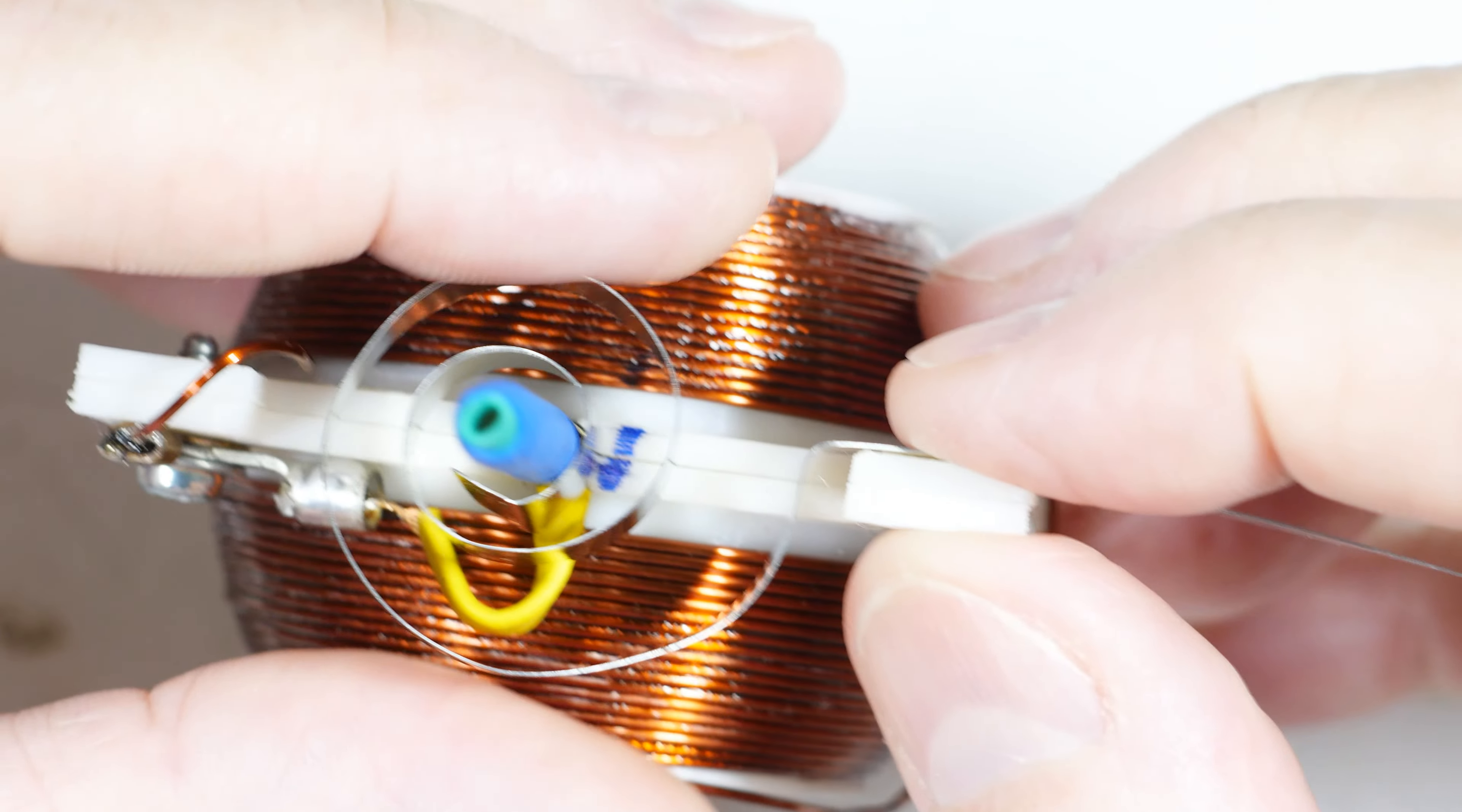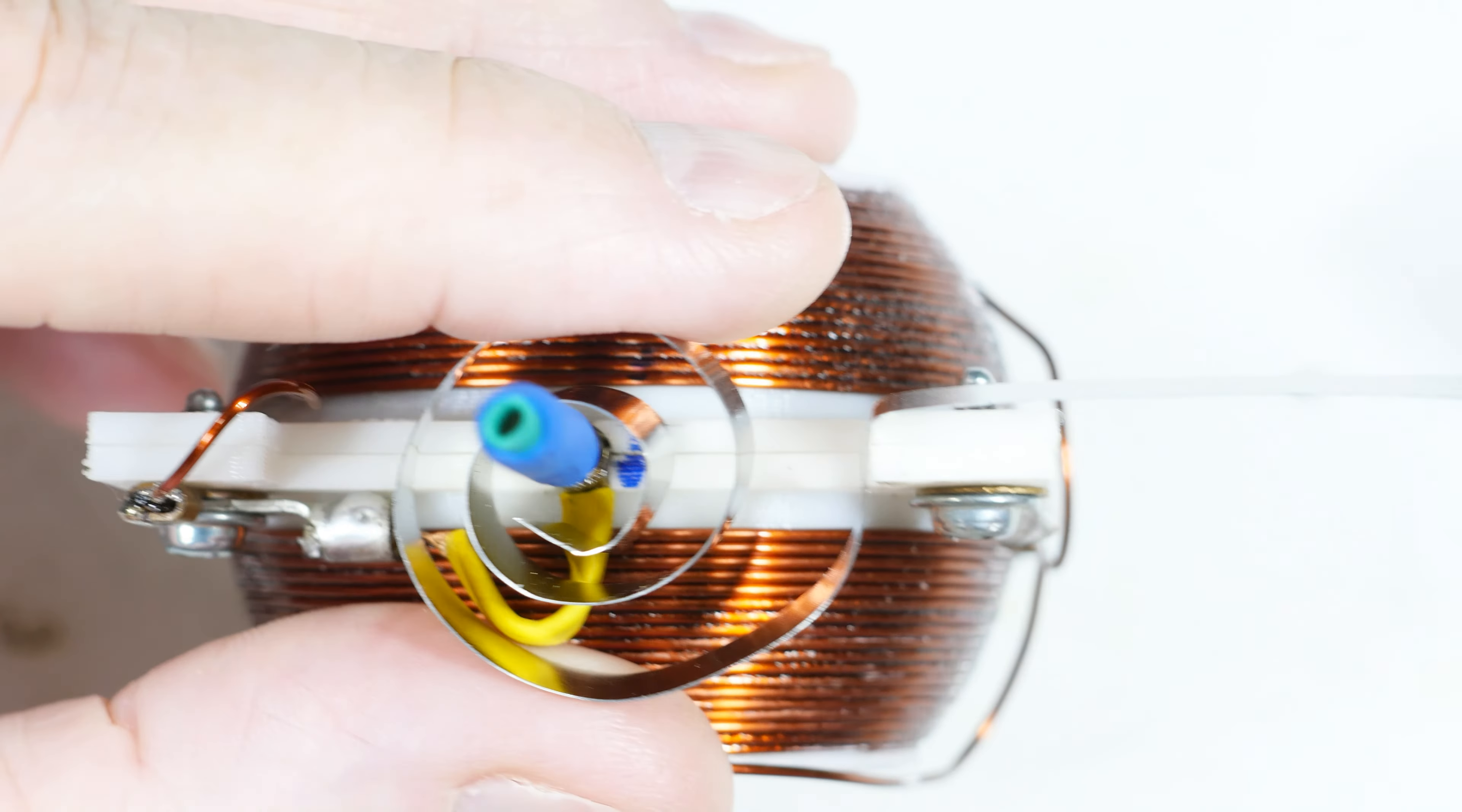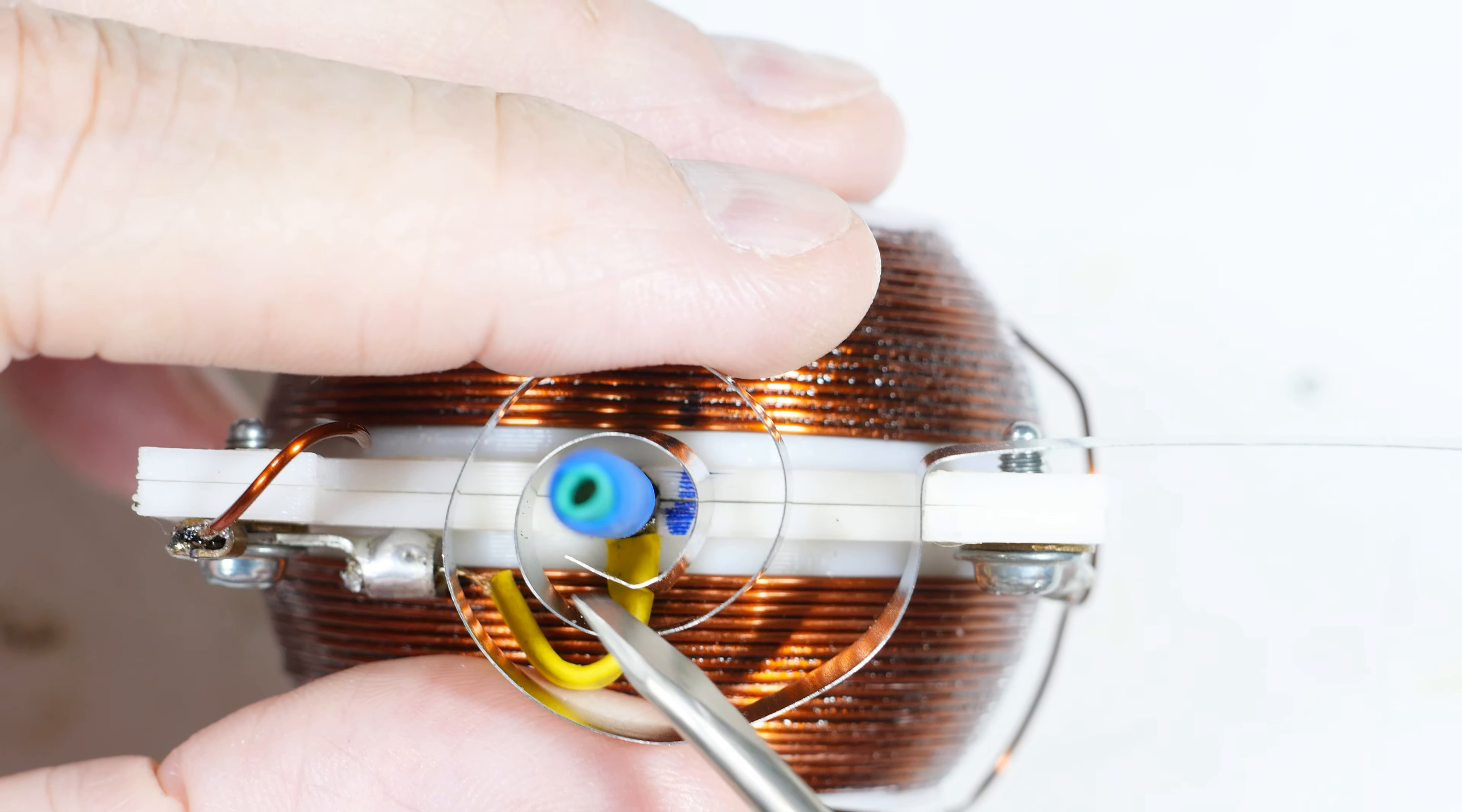And then the center part, you would—I'll get my finger out of the way—you can curl this around the shaft, solder it on. On a bigger shaft, you can put a tiny screw, anything like that to make a good electrical connection to the shaft.